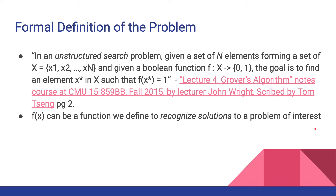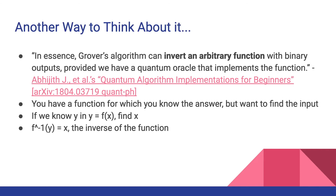Earlier someone on the Zoom call asked — because I brought up Grover's algorithm as a benefit of quantum computing — he said it feels like in some examples for Grover's algorithm you already know the answer, so doesn't that defeat the point? It turns out there's a distinction between having a function that calculates the answer and having a function that just recognizes the answer. Another way to think about Grover's algorithm is we can invert a function that takes some binary output — if we have y = f(x) and we know what y is, we can find what x is.